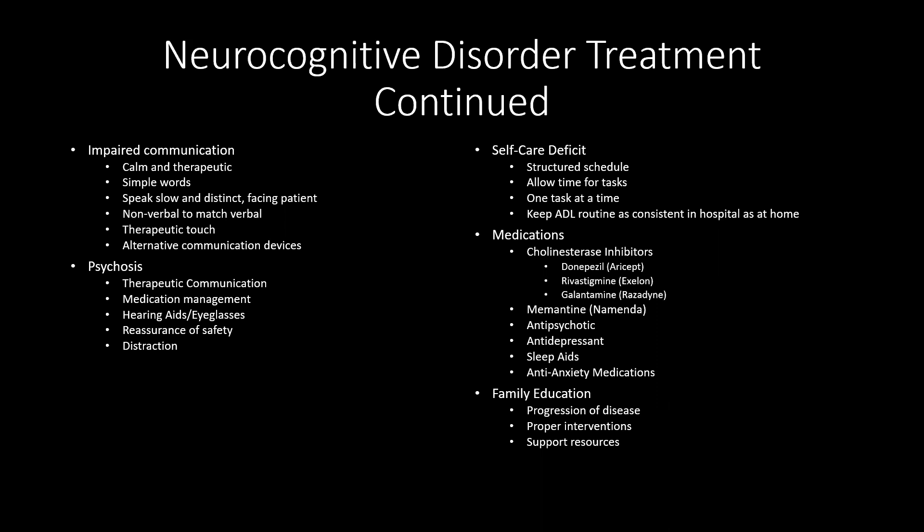Common medications used for neurocognitive disorders include cholinesterase inhibitors such as donepezil or Aricept, rivastigmine or Exelon, and galantamine. We can also use Namenda, antipsychotic medications, antidepressants, sleep aids, and anti-anxiety medications.